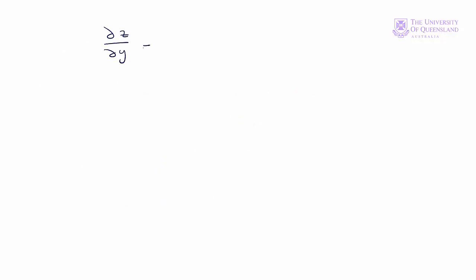Similarly, del z del y is equal to del log x del y plus del log y del y, and that's equal to 1 on y.